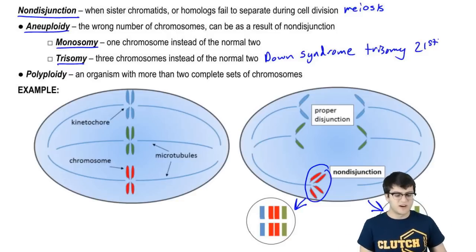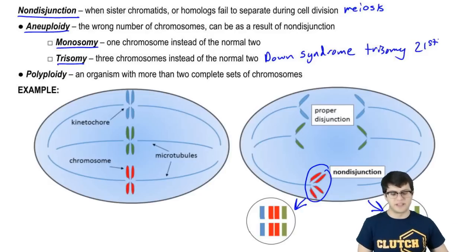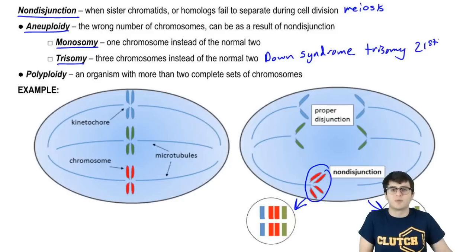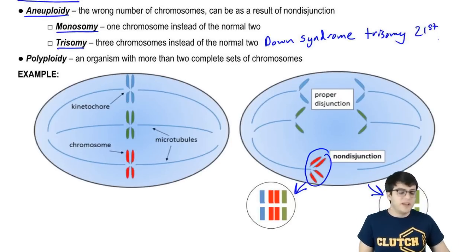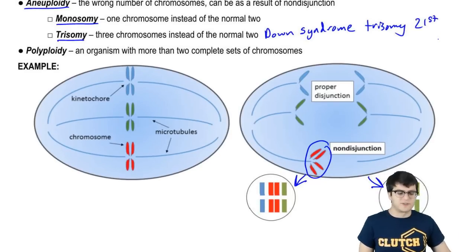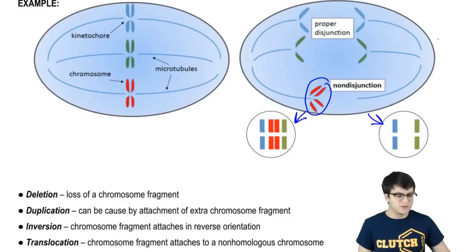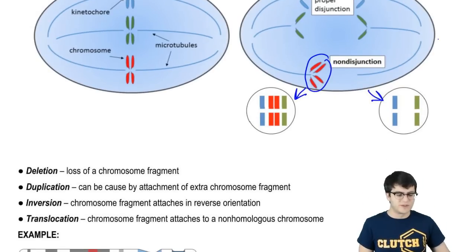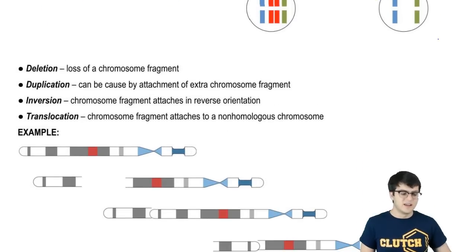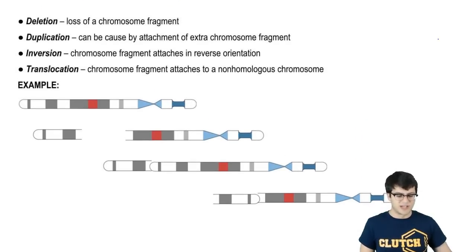Some organisms are polyploid, meaning they have more than two complete sets of chromosomes. Plants can be triploid or tetraploid, having three or four complete sets. Plants actually do all right with these extra chromosomes, but it's pretty harmful to humans and other animals — we don't do well if there is an upset in the number of chromosomes we're supposed to have.